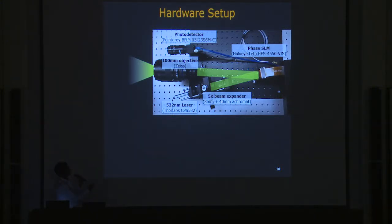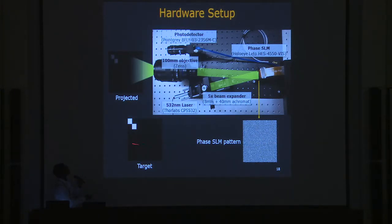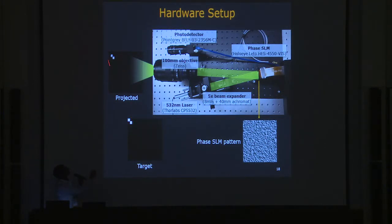As an example, here is a target pattern displayed on the modulator and the corresponding projected pattern. Changing the phase pattern achieves a different projected pattern, and the light intensity slightly increases. Going more spatially compact, the intensity increases further, but the overall energy contained within the pattern stays constant.